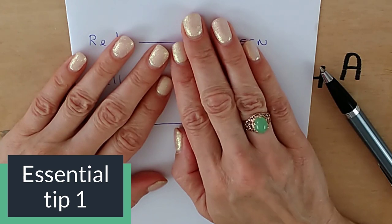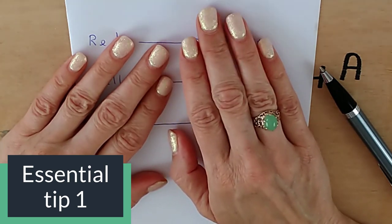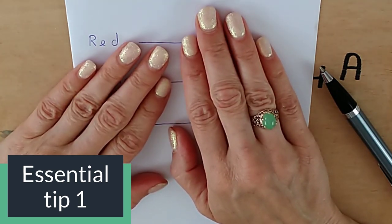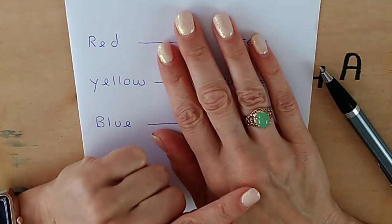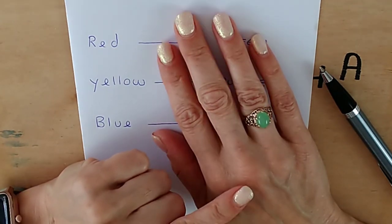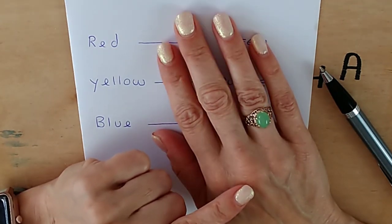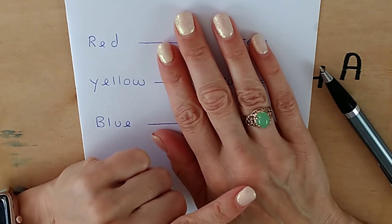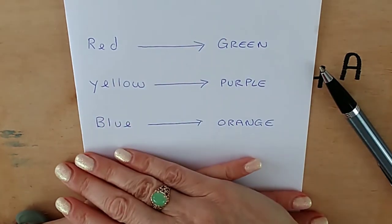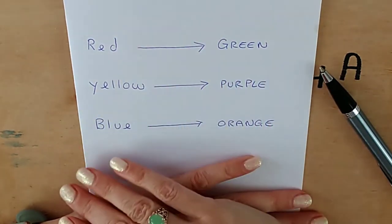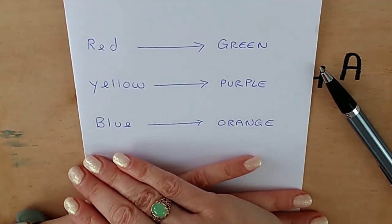We're going to start with the method of darkening watercolors that is most often spoken about, and that is to use color opposites. But before we do that, we're going to have a little look at some very simple color theory because it's important that you understand not only why this works, but how it can go wrong. So I've written down here three color opposites. There are only three. They're sometimes called complementary colors.